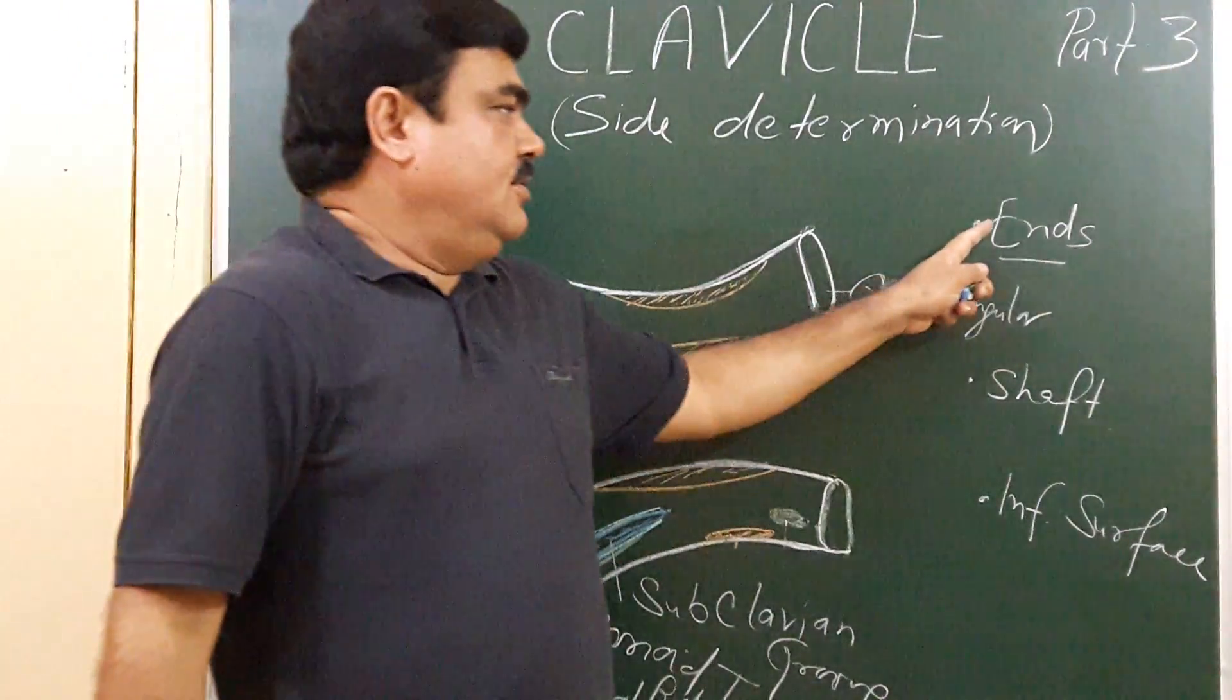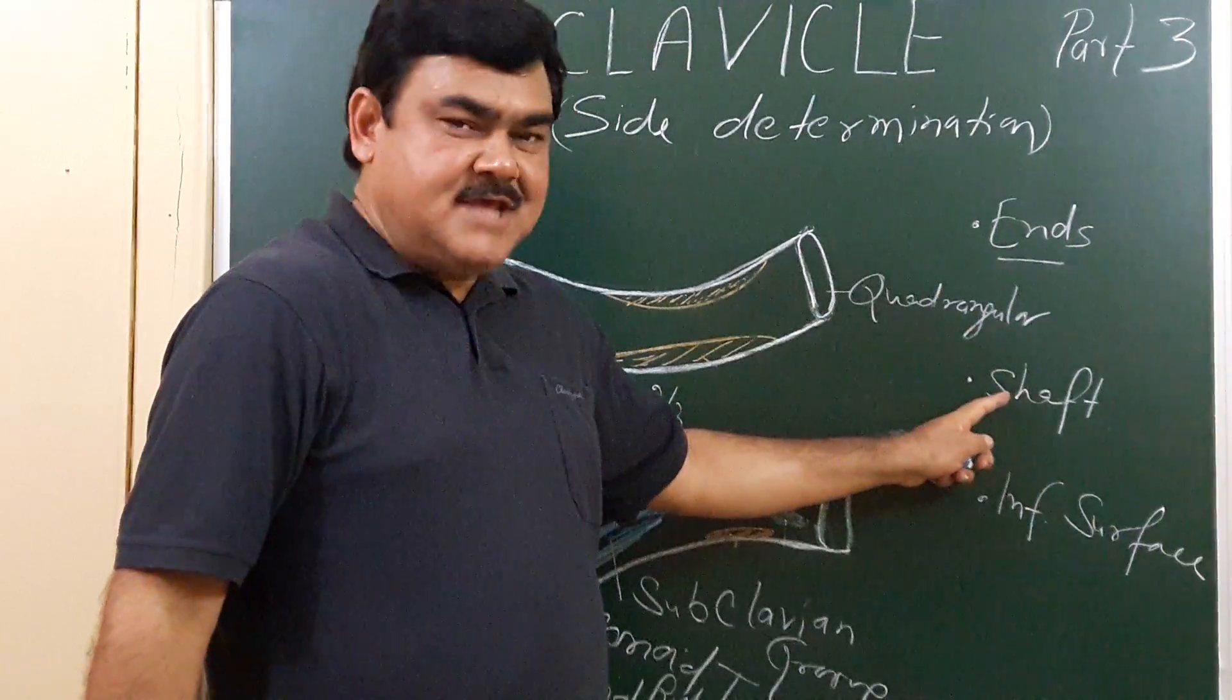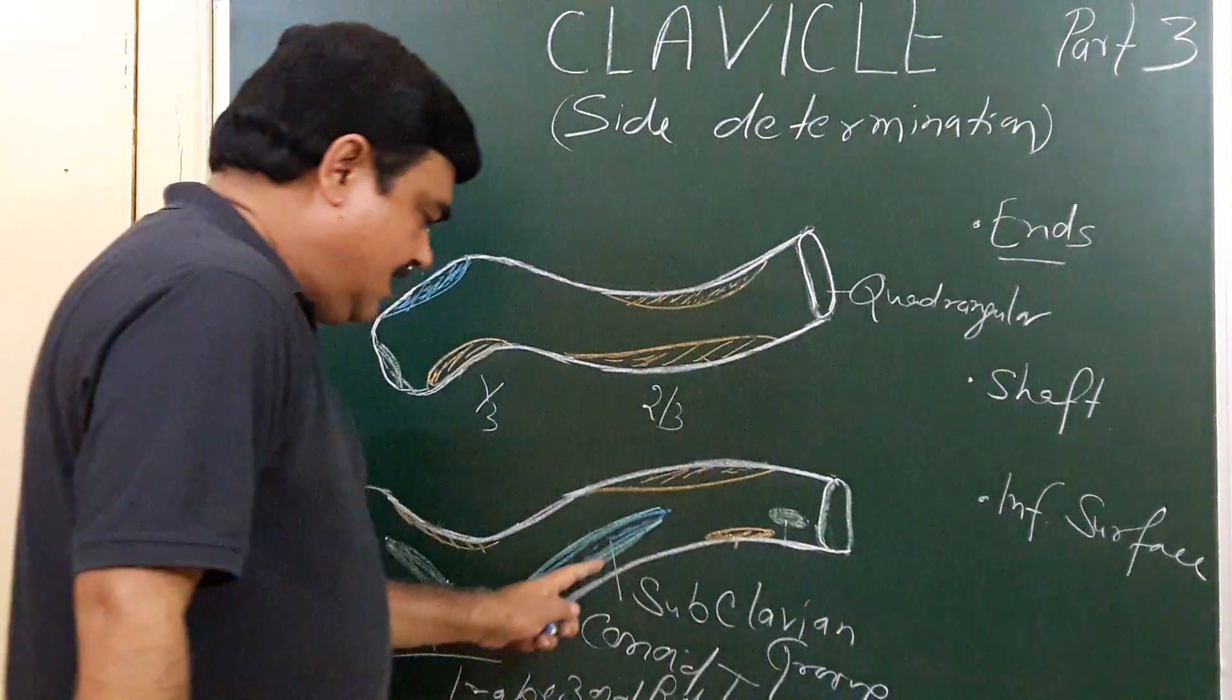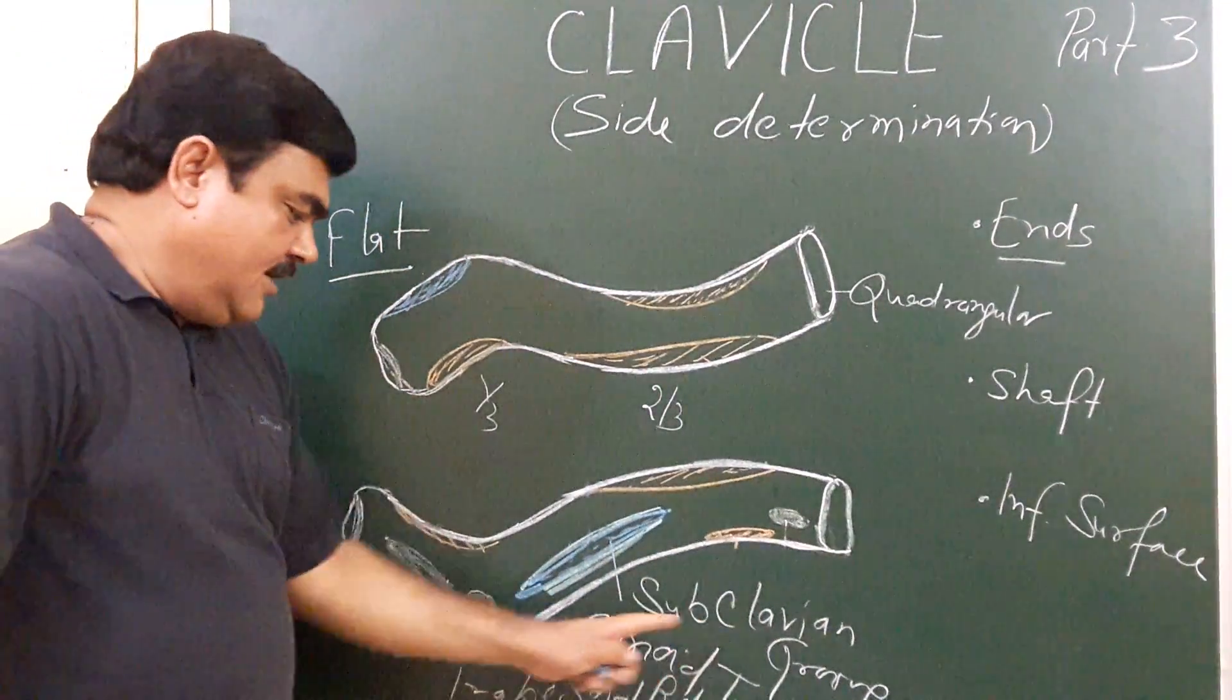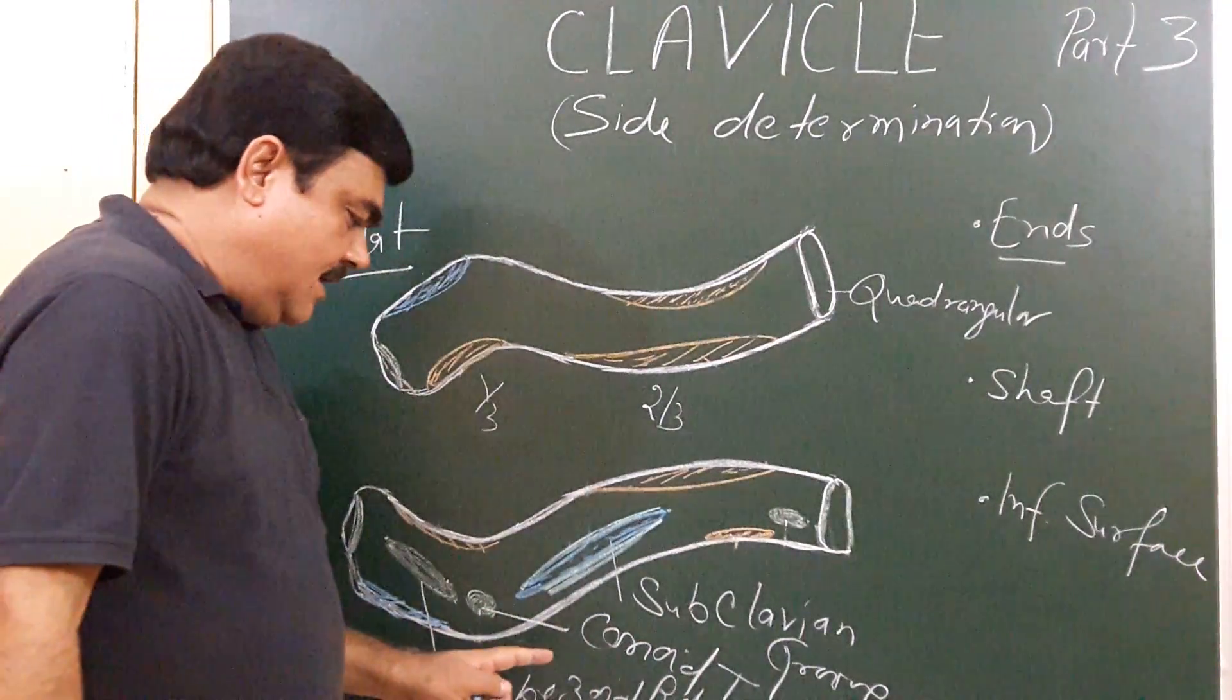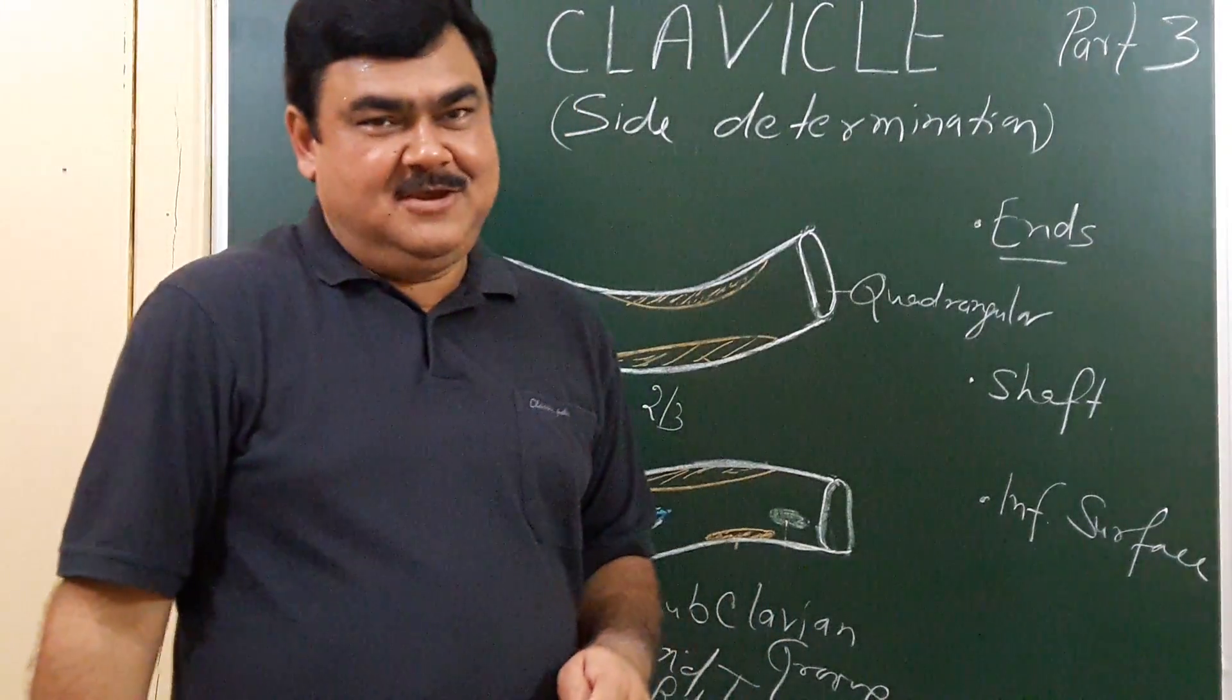So by seeing these things - the ends, the shaft curvature, and the inferior surface with its three features: subclavian groove, conoid tubercle, and trapezoid ridge - you can determine the side of the clavicle. Thank you.